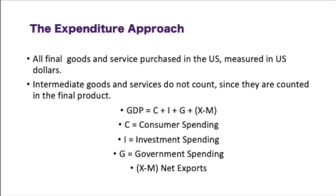The big equation for the expenditure approach or GDP is C plus I plus G plus X minus M. C is consumer spending, which is the largest portion of GDP through the expenditure approach. Consumer spending is any time that you spend money on goods — so if you go to lunch and buy lunch, you're adding to the GDP through consumer spending. If you go and buy a t-shirt at the mall, you're adding to consumer spending.